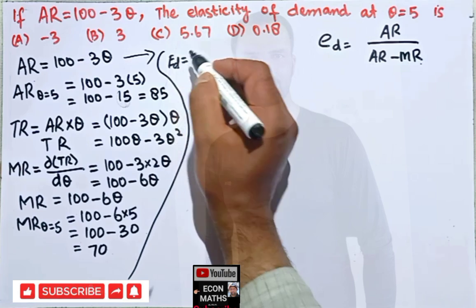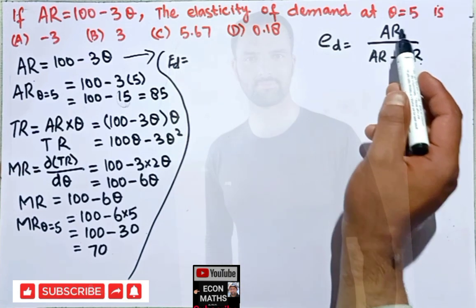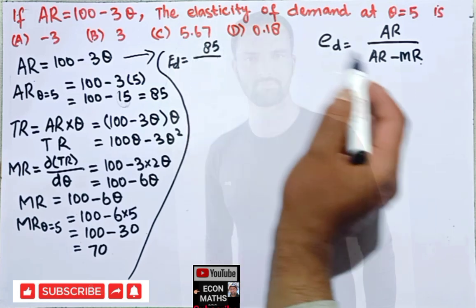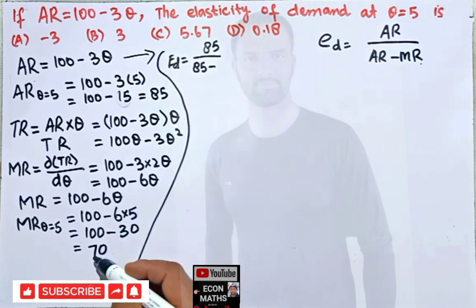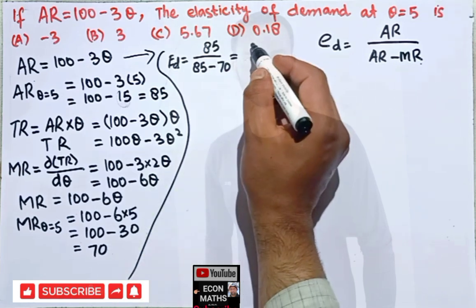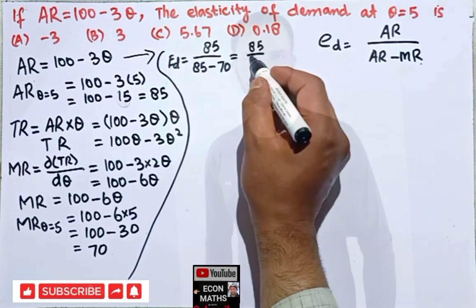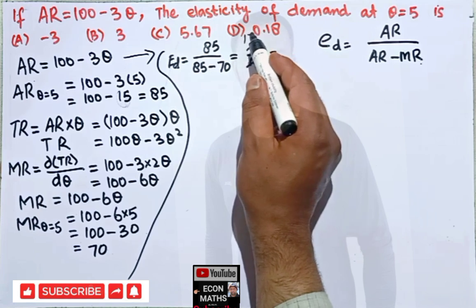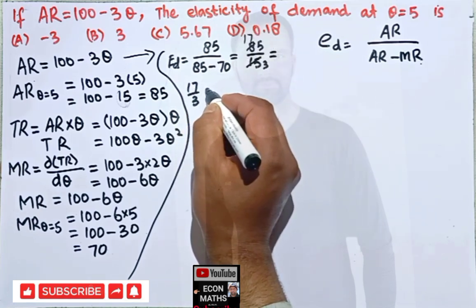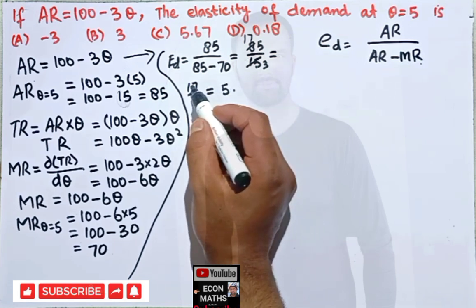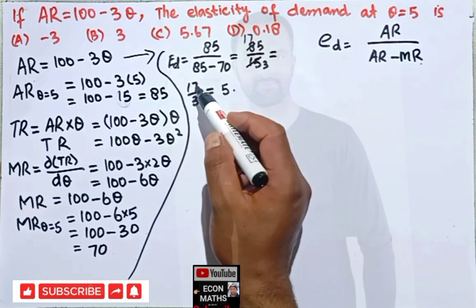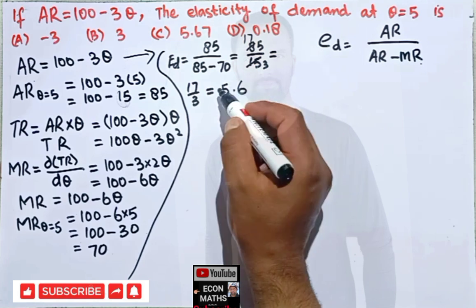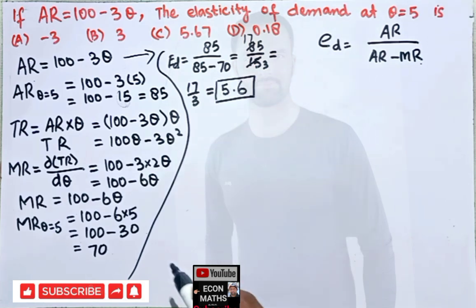Now using the formula, elasticity of demand equals average revenue divided by (average revenue minus marginal revenue), which is 85 divided by (85 minus 70), giving us 85 divided by 15. This comes out to be 85/15, which equals 5.67. So we get elasticity of demand equal to 5.6 approximately.